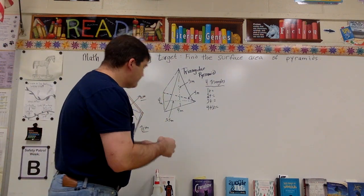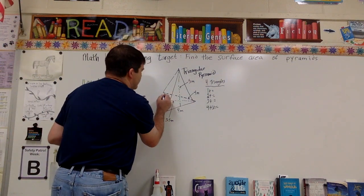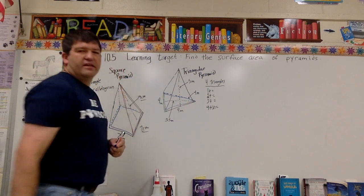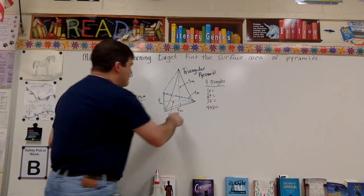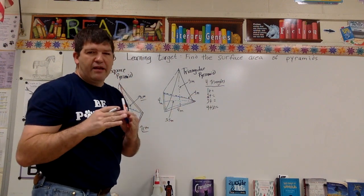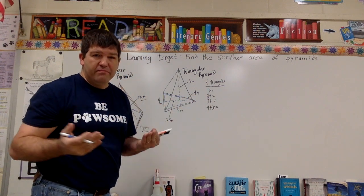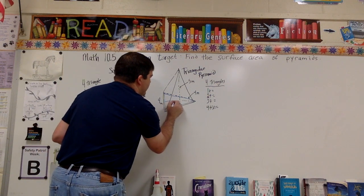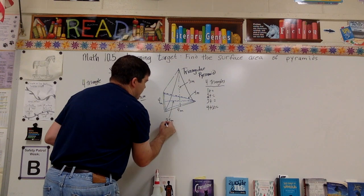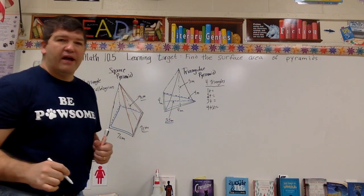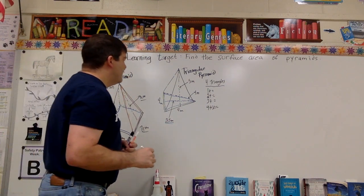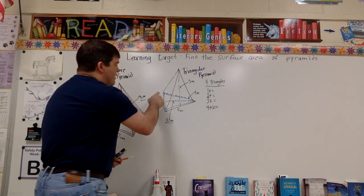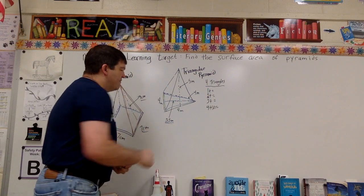Now let's go to the triangular pyramid. The base triangle is four by four by four — it's an equilateral triangle, every side is equal, which makes it really nice. It does give me a height for that base triangle of 3.5. So I can figure out that triangle based on a base of four and a height of 3.5.